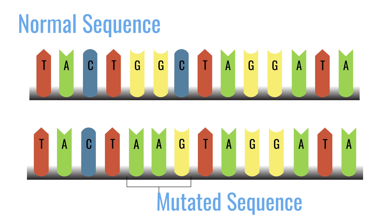How does NGS identify mutations? The best approach when sequencing is to compare the sequence of the tumor DNA to normal DNA from the same person, and then look to see if there are any differences.